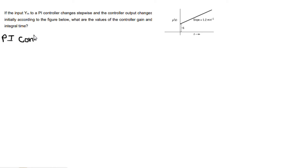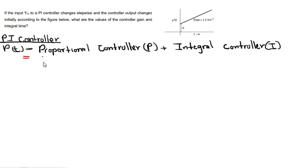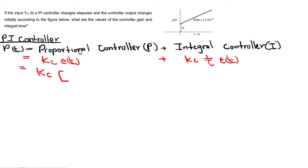From process control, PI controller: P stands for proportional controller and I stands for integral controller, so PI equals P plus I. The proportional controller P has a linear relationship between the error signal and the controller command. The integral controller has an integral relationship. The proportional controller is equals to kc (the proportional gain) times e(t) (the error). The integral controller is equals to kc over integral time times e(t).